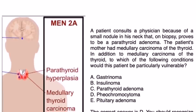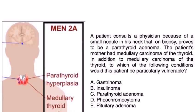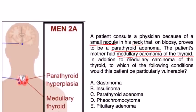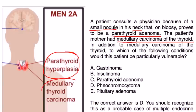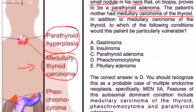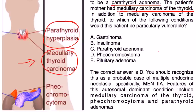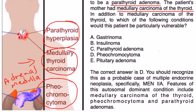Here is a clinical vignette: a patient consults a physician because of a small nodule in his neck that on biopsy proves to be a parathyroid adenoma. The patient's mother had medullary carcinoma of the thyroid. To which condition would this patient be particularly vulnerable? This patient already has a parathyroid adenoma and his mother had medullary thyroid carcinoma, so he is most likely developing MEN2A. The missing piece of the puzzle is a tumor of the adrenal medulla — a pheochromocytoma — which in this question is choice D.